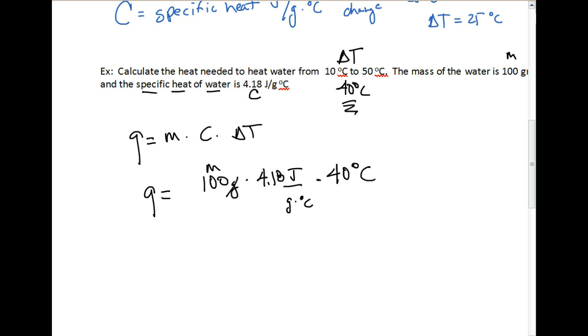We're going to cancel some units. Grams is on the top and bottom, so our answer is going to be left in joules. Let's run this through our calculator: 100 multiplied by 4.18 multiplied by 40. We come out with 16,720. I'm just going to round this to sig figs, 1.7 times 10 to the fourth joules. That is a measure of heat. A pretty straightforward problem.